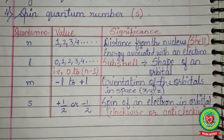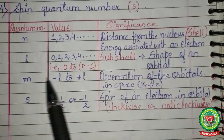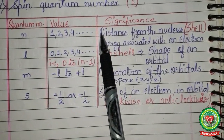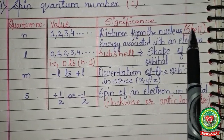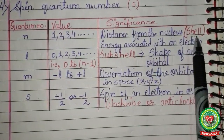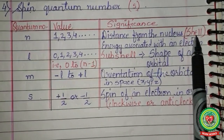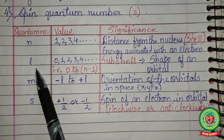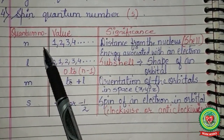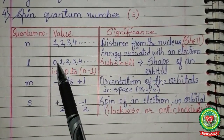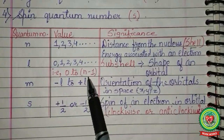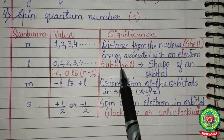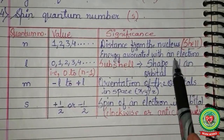For the principal quantum number n, its value starts from 1 (i.e., 1, 2, 3, 4, and so on). It gives us the distance from the nucleus to the outermost shell and tells us the shell or orbit of the electron and the energy associated with it. For the azimuthal quantum number l, its value ranges from 0 to n−1. It gives the subshell identity and the shape of the orbital.